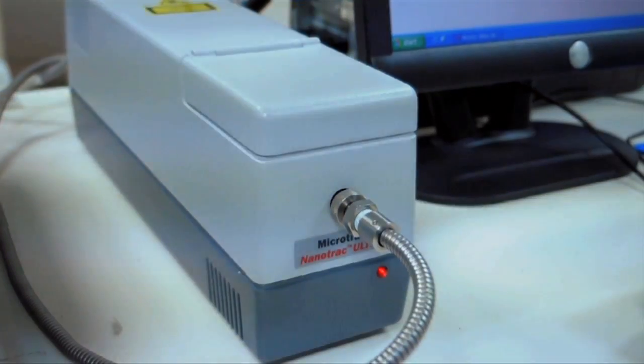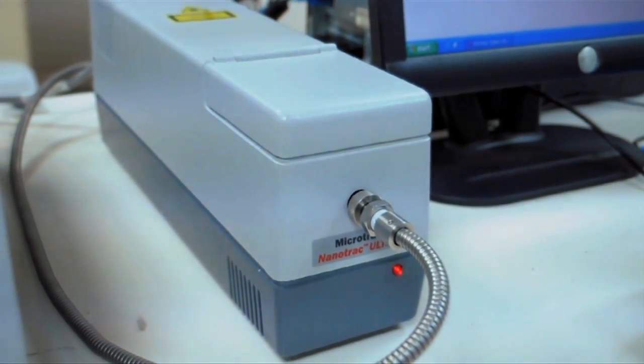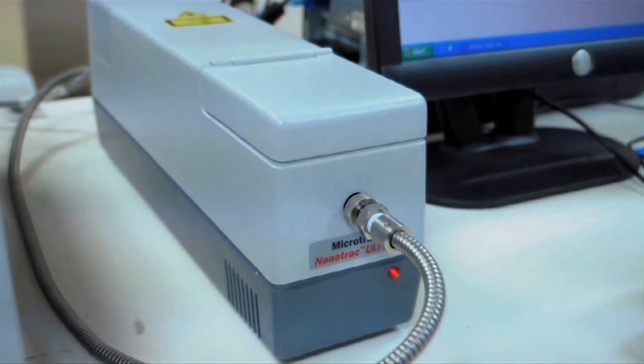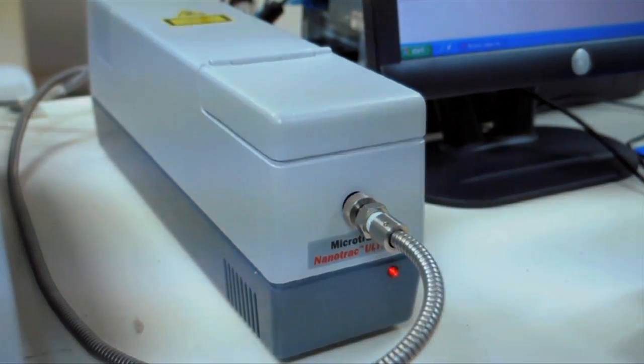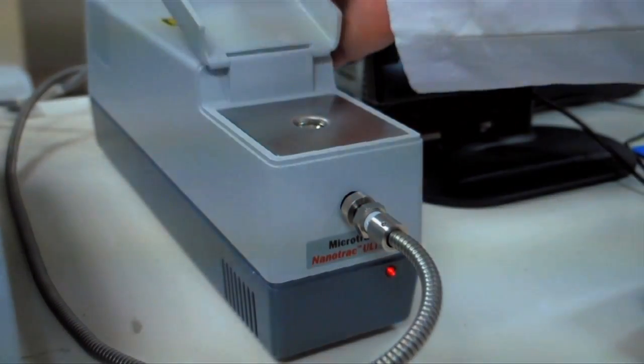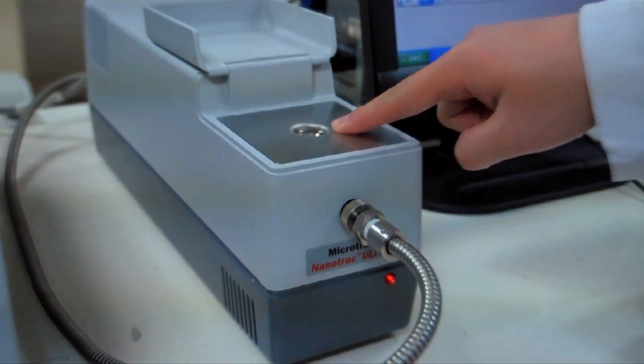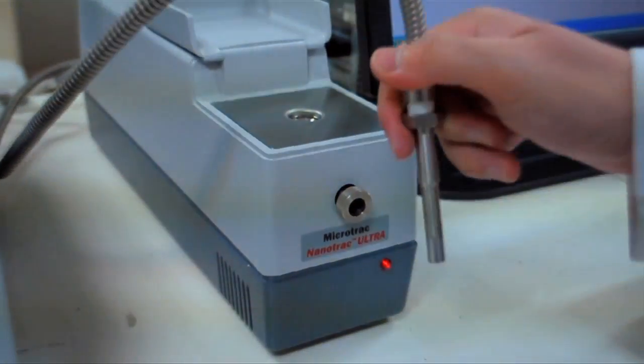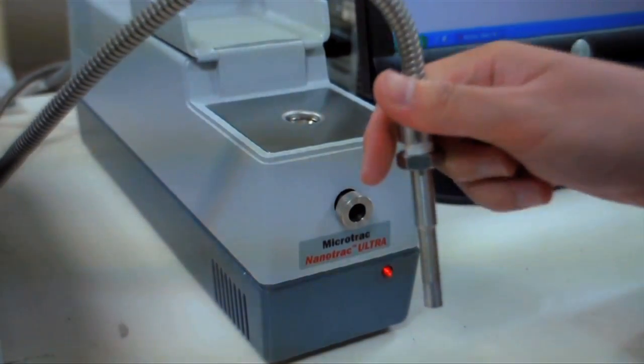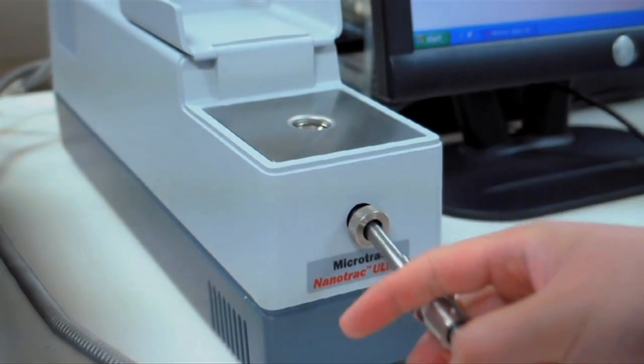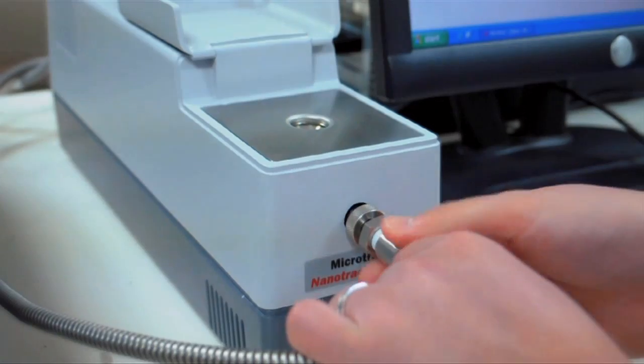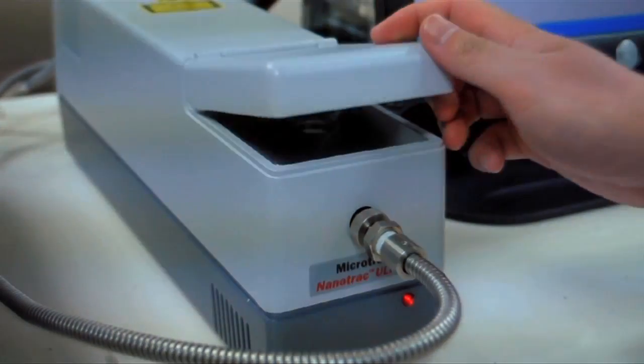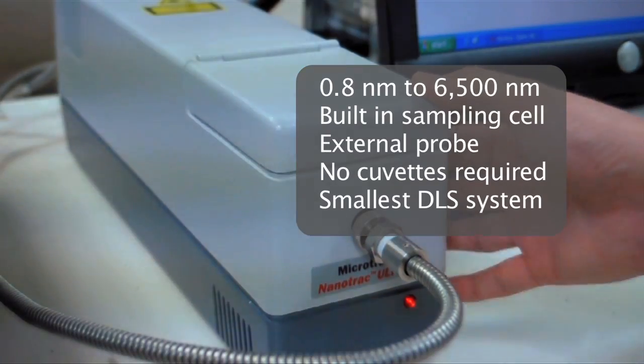Once again, this is the Nanotrack which is a particle size analyzer for nanoparticles. It has a size range from 0.8 nanometers to 6.5 microns. You can use the built-in sampling cell or you can use the external probe. You do not need to use consumables such as cuvettes. The Nanotrack is the smallest dynamic light scattering system in the world.